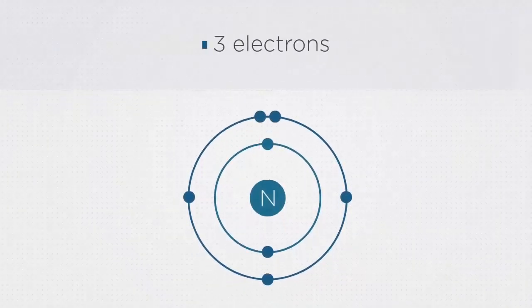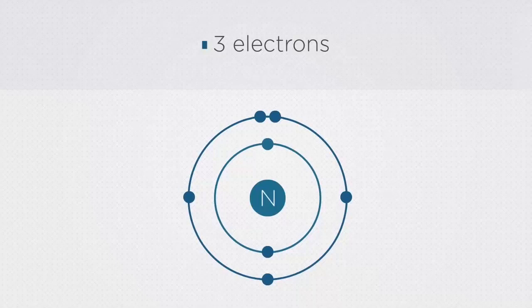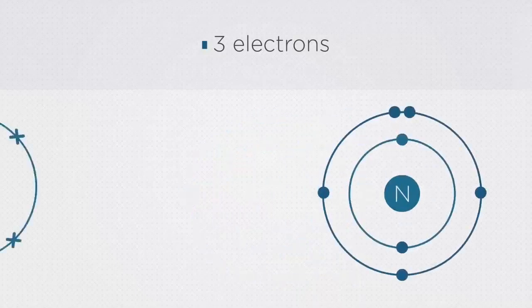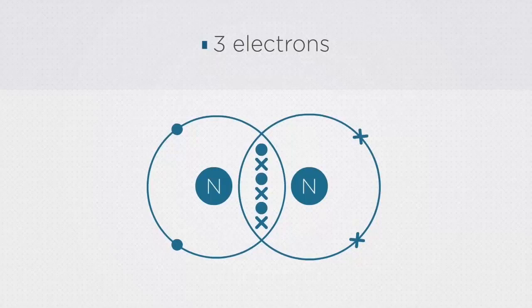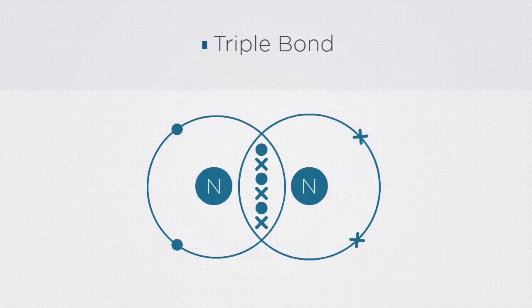If you said that three electrons are available to form a shared pair, you'd be correct. You should see that there are three shared pairs of electrons in the overlap of the shells. This is called a triple bond. You should also notice that this example fulfills the octet rule.